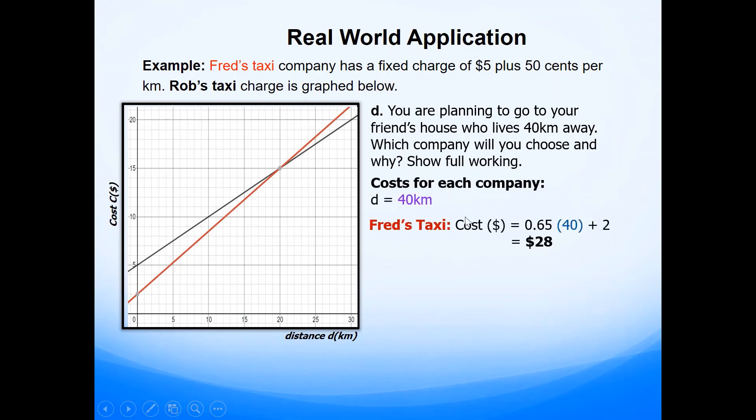So Fred's taxi, the equation is cost is given by 0.65d plus 2. And the distance here is 40 kilometers. This gives a cost of $28. And then Rob's taxi, the cost is 0.5 times 40 kilometers plus 5, which gives you a total of $25. And then you write a justification for which company you will take and justify it. So it says I will take Rob's taxi because it is $3 cheaper.